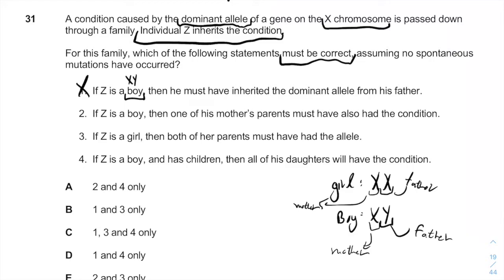If the mother's parents have the disease, therefore the mother also has the disease, and therefore the boy will also have the disease, because X chromosomes are inherited from the mother when it comes to males. So option two is correct.